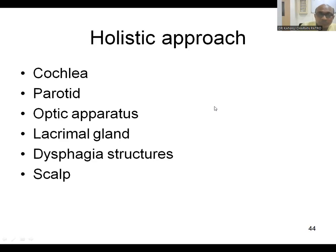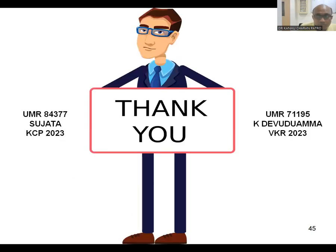In a holistic approach, you should also contour the cochlea, parotid, optic apparatus, lacrimal gland, and other critical structures — including the skull — because in the targeted therapy and immunotherapy era, patients are living longer. So go for a holistic approach in whole brain RT. I will now show you the practicality of the plan and contouring in the next few minutes.